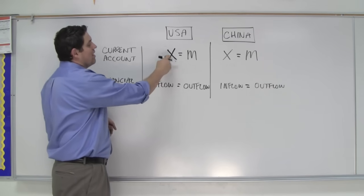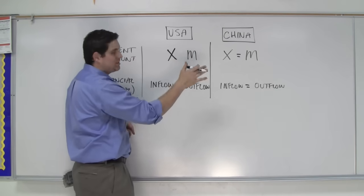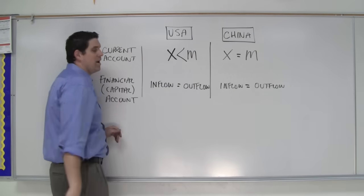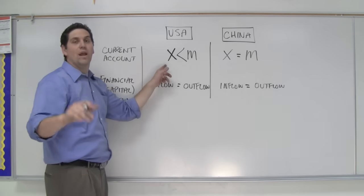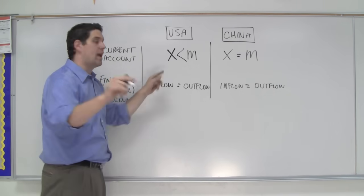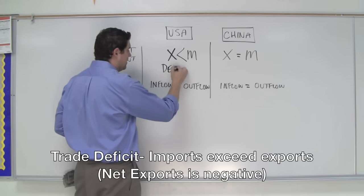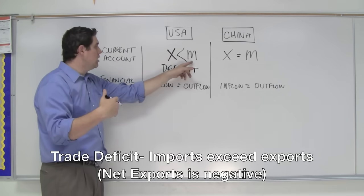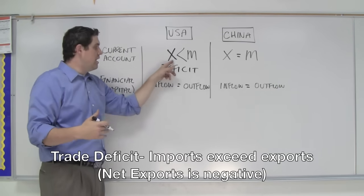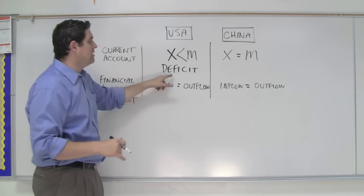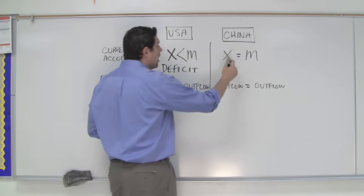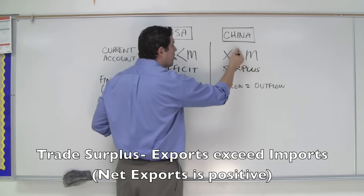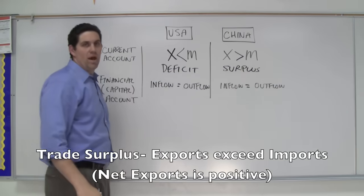Instead of exports and imports being equal, the more realistic situation is that the United States imports a whole lot more than it exports from China. In that situation, is this a trade deficit or a trade surplus? The answer is a trade deficit. A trade deficit is when a country imports more things from another country than it exports to that country. If the United States has a trade deficit with China, China must have a trade surplus with the United States, which means they're exporting more than they're importing from the United States.